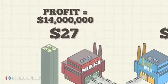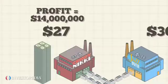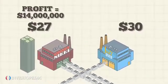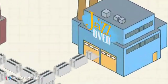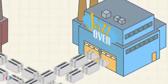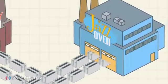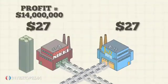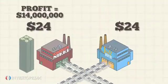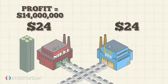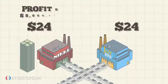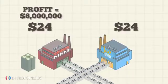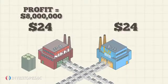However, Crispy Nicky also knows that if it boosts production, its competitor Jazz Oven will follow suit. And with 2 million more toasters on the market, the price will drop to $24, and Crispy Nicky's profit would dip to $8 million — lower than it is now at current production levels.